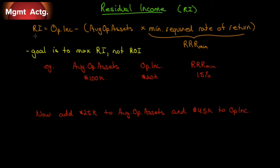What we want is positive residual income, which is the same as positive economic profit. For those with a microeconomics background, economic profit is residual income. For those without, don't worry too much about it. Rather than maximizing ROI, our goal is to maximize residual income. Let's look at an example.